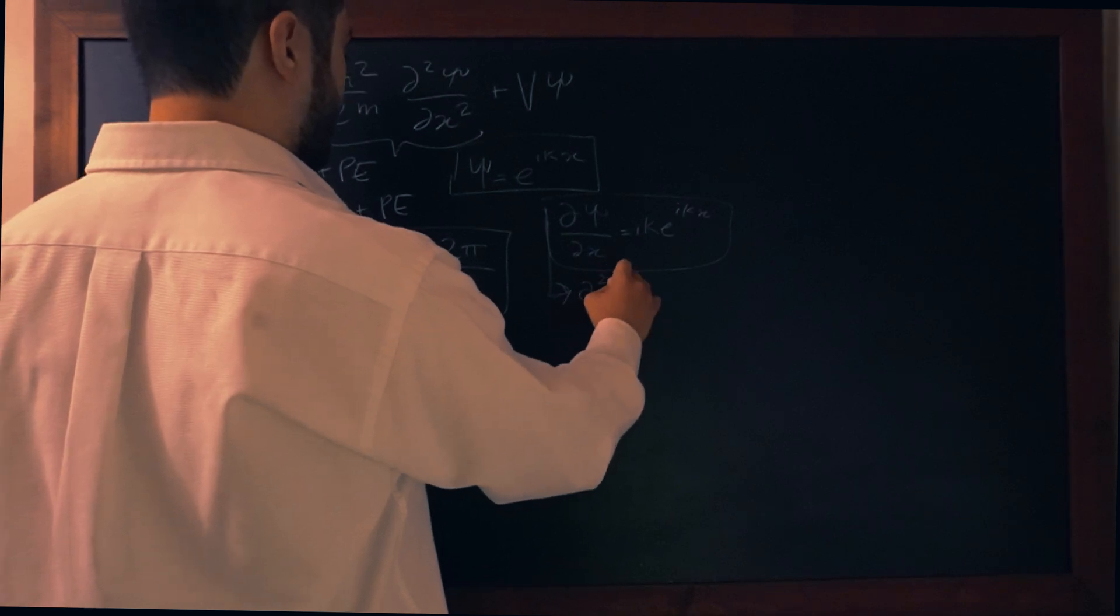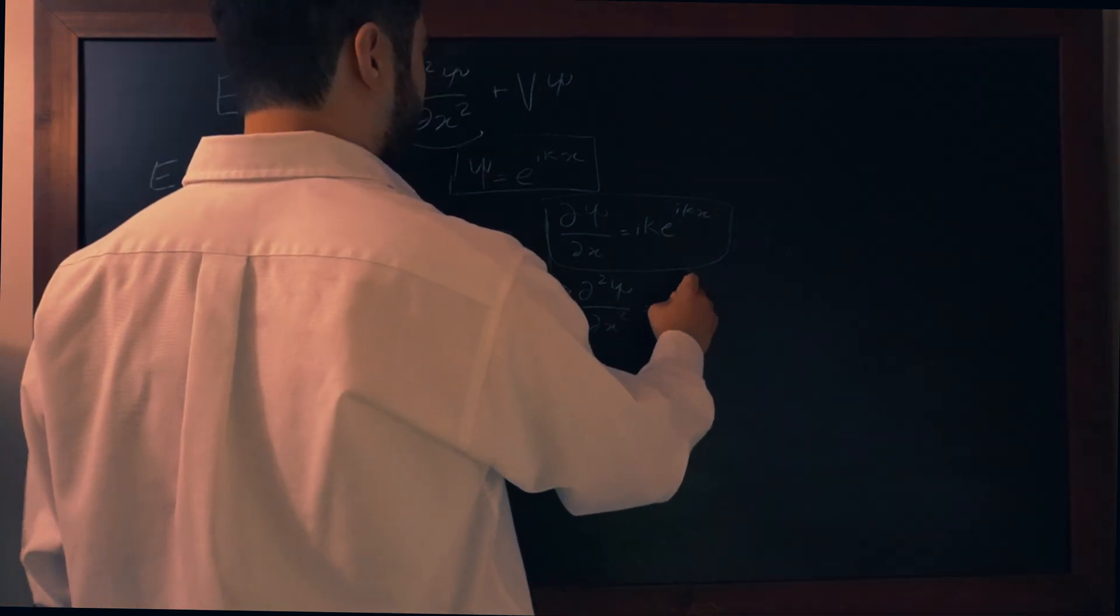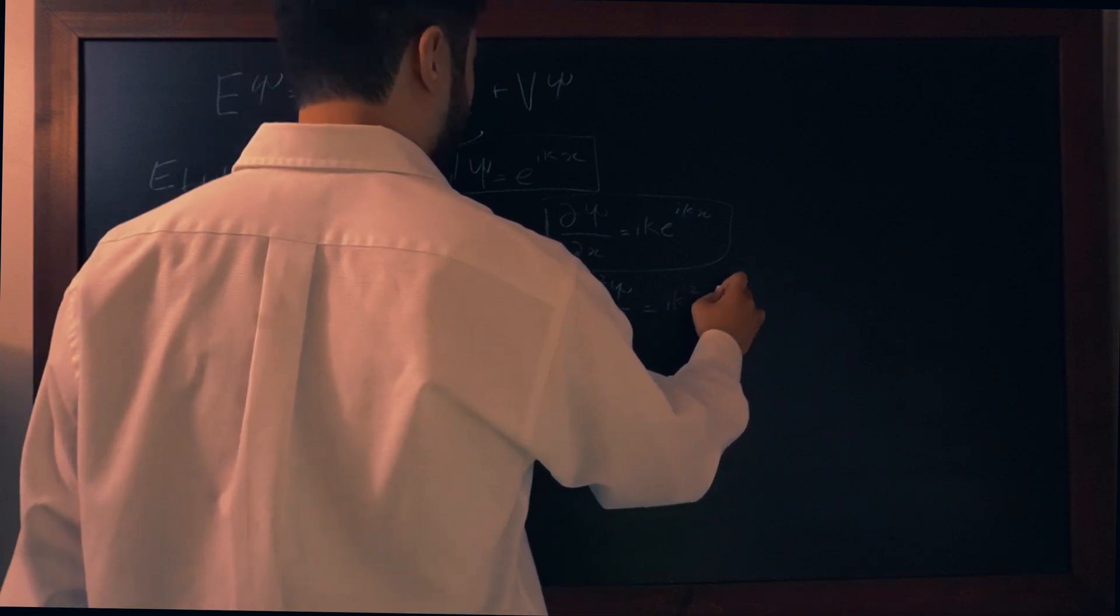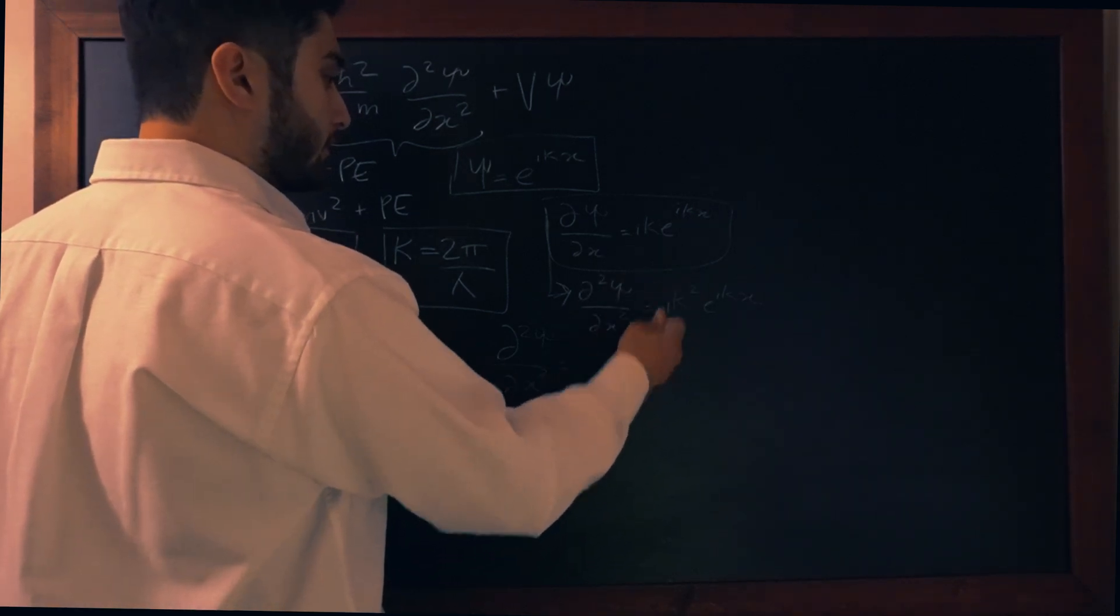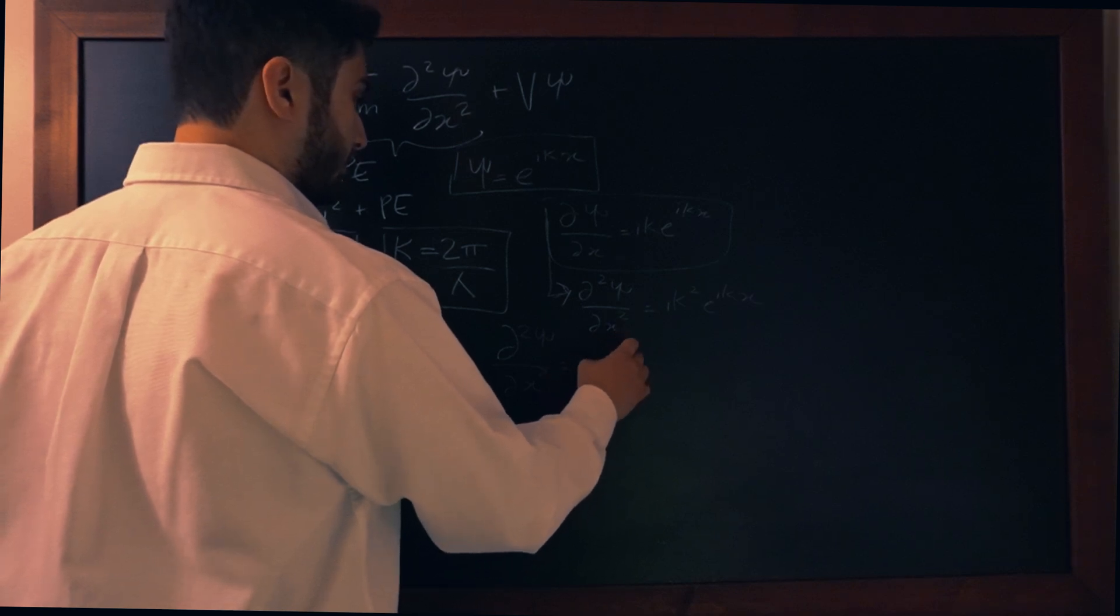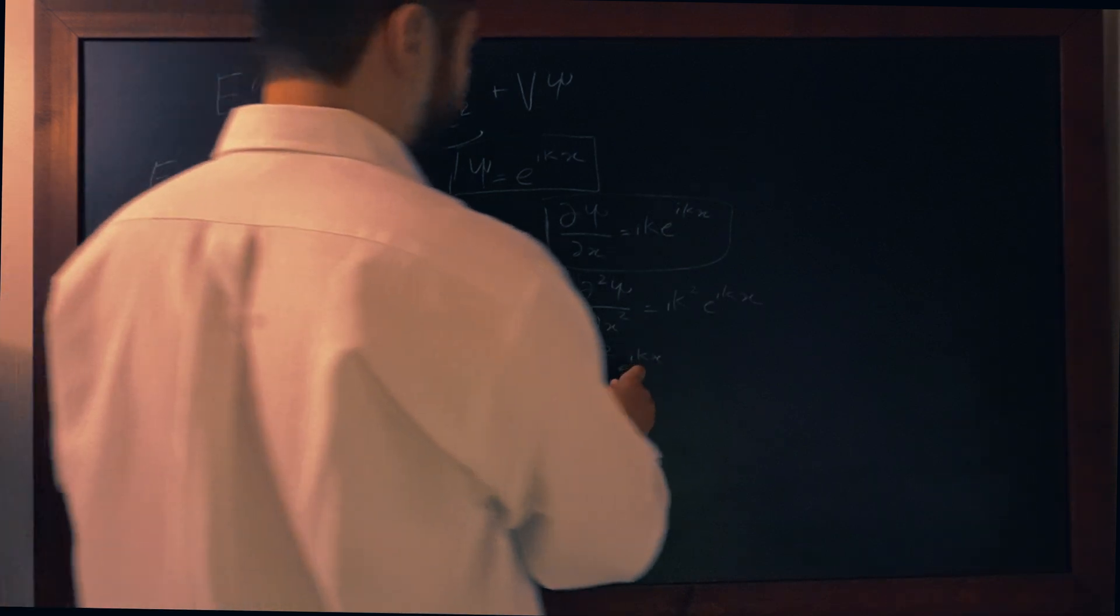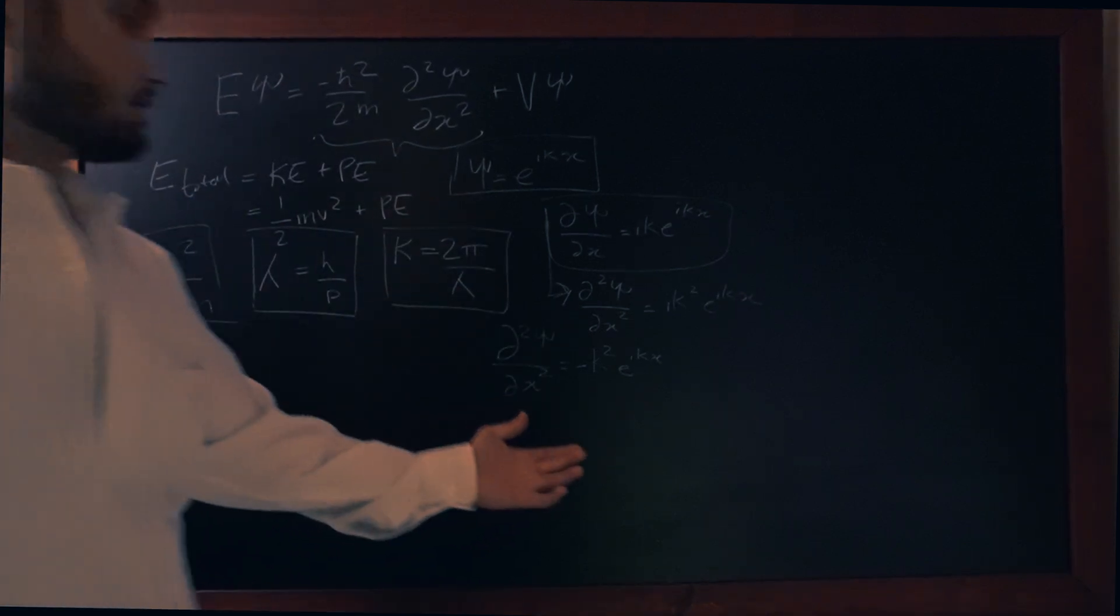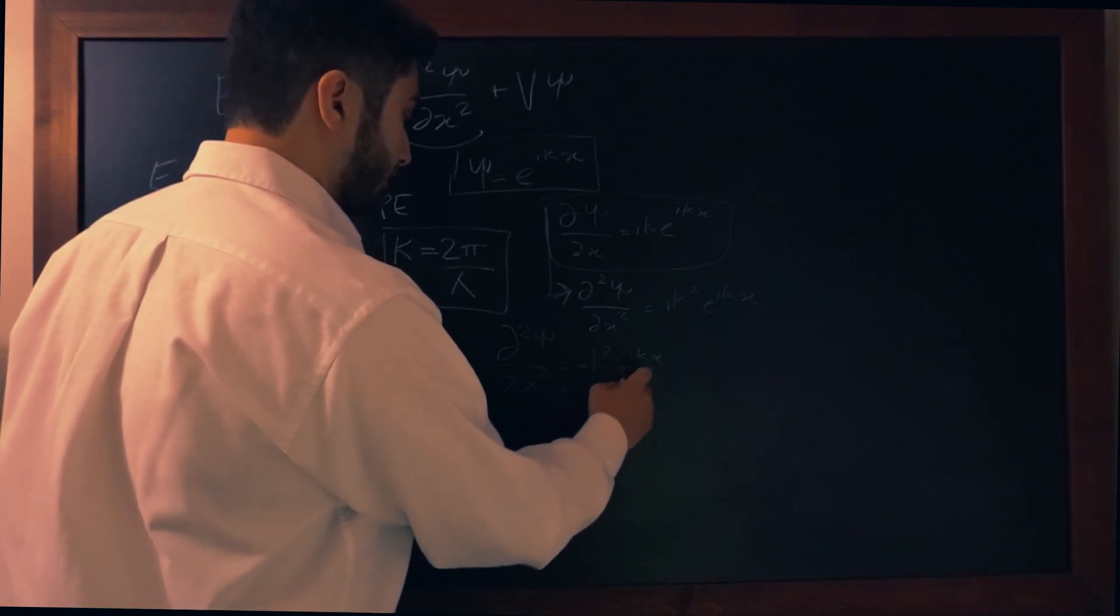The d²ψ by dx squared is equal to ik squared by e to the ikx. So we know that i squared is negative one. And then we're left with this k squared. So we can actually just write that as negative k squared e to the ikx. And what is e to the ikx? Well that is ψ. So if we rewrite this we could simply say that it's equal to negative k squared ψ.